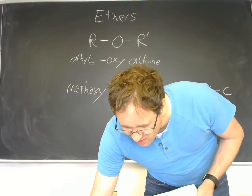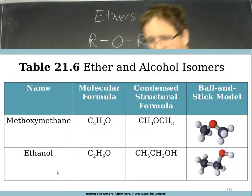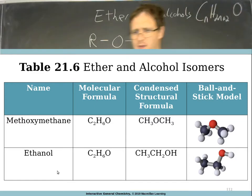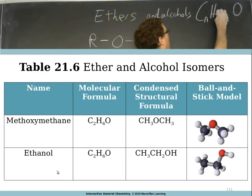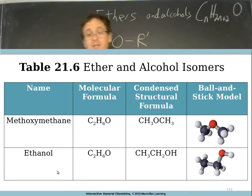I want to show how alcohols and ethers are structural isomers of each other. Here we have methoxymethane and ethanol. They both have that same molecular formula of C2H6O. Ethers and alcohols will have the formula of CnH2n+2O, which is just the formula of an alkane with an oxygen on the end.